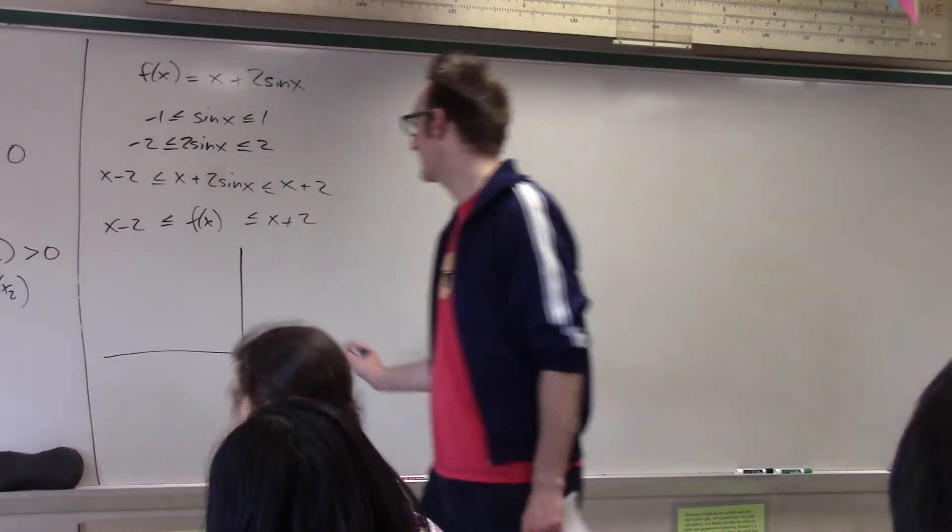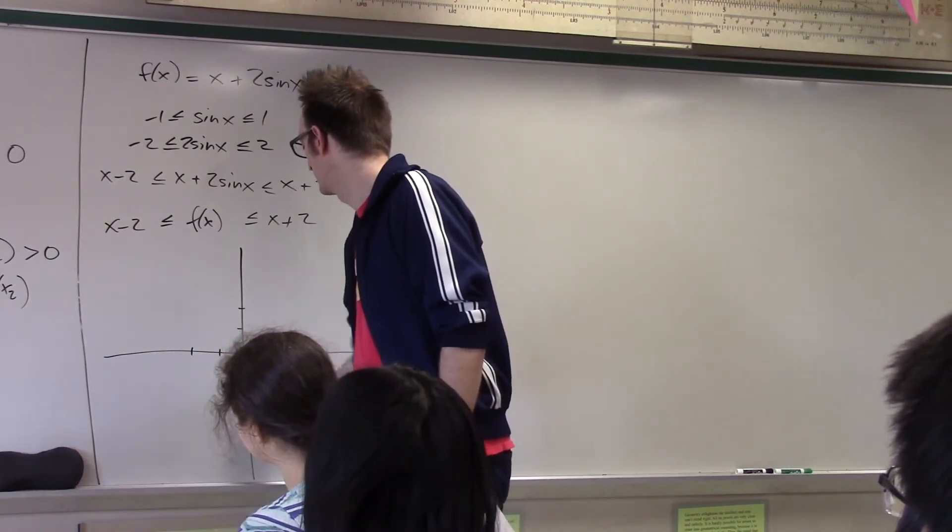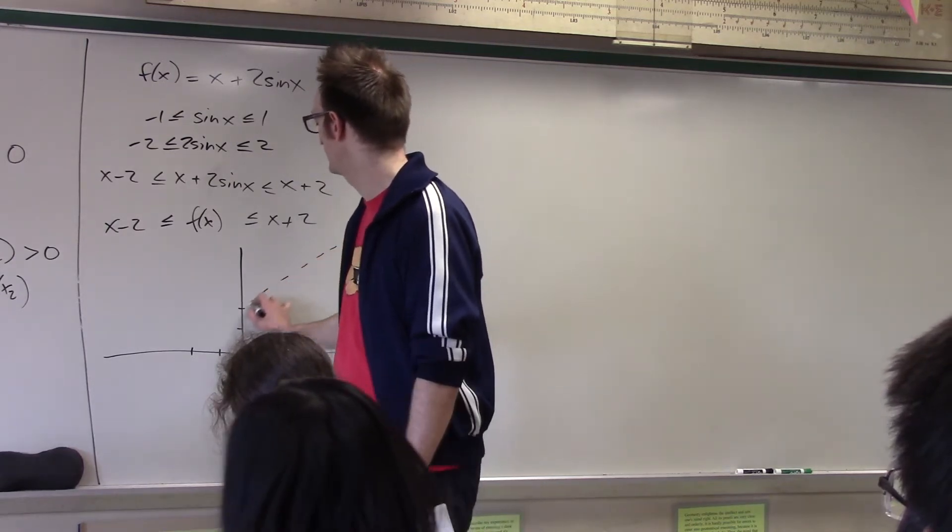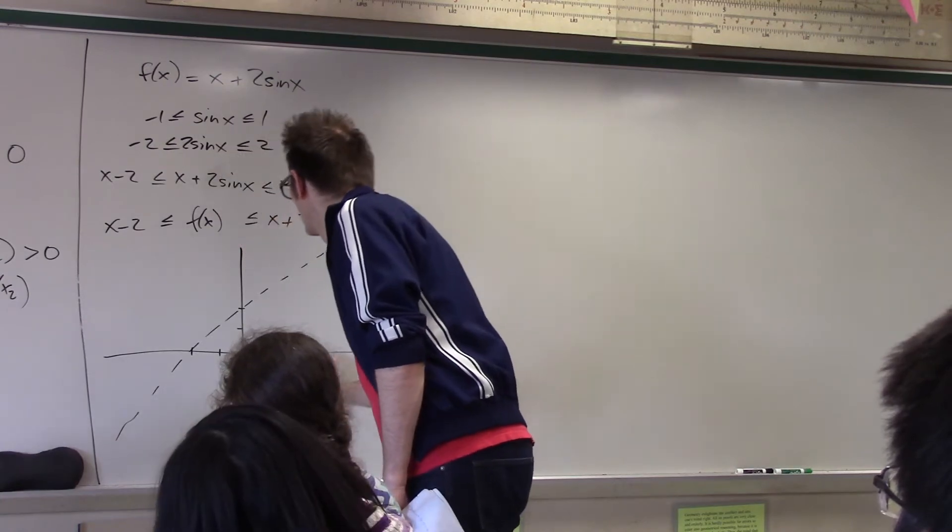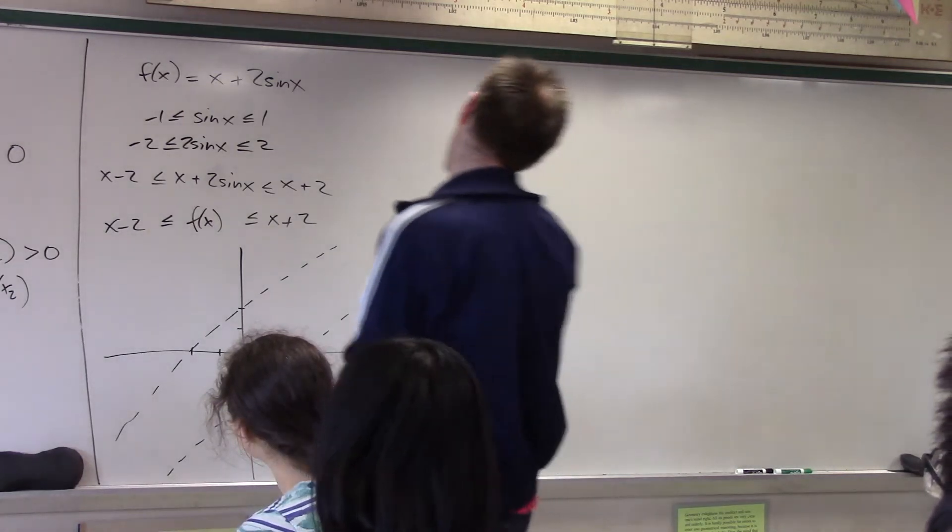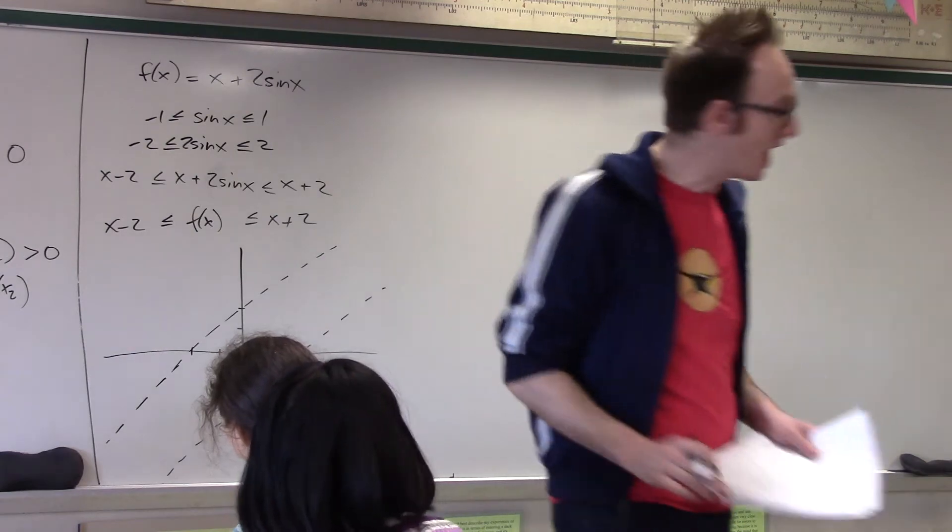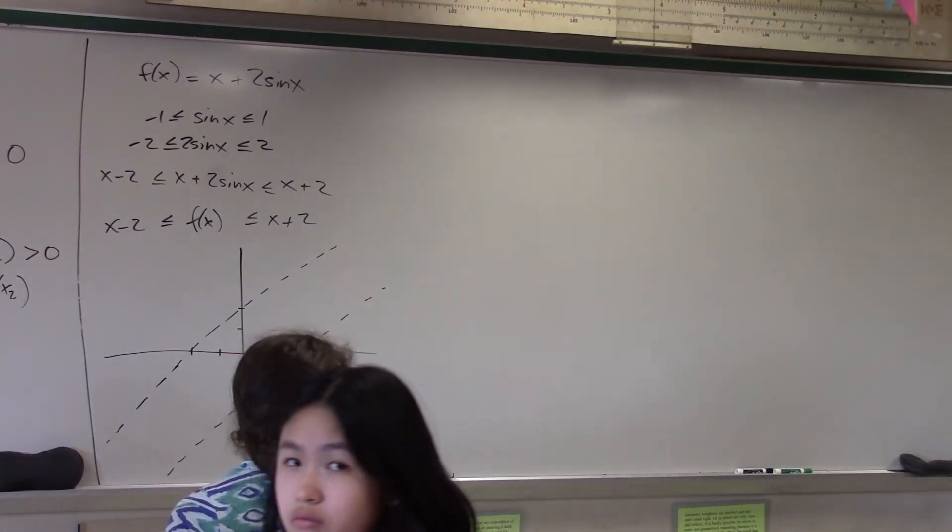So, here we go. Here is the line. Yeah. Y equals x plus 2. Here is the line. Y equals x minus 2. That's looking so bad. Why is that so bad? All right, and now, I know that my function must lie somewhere between these lines. Yeah? Okay.